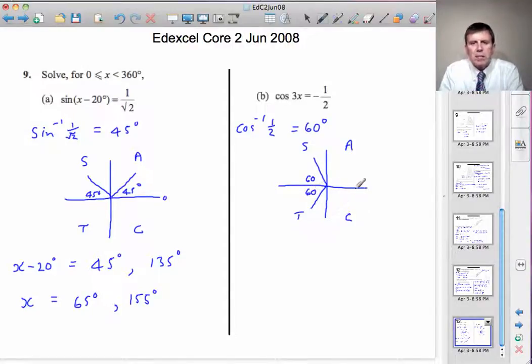And that gives me the answers. That angle there, measuring from 0. And that angle there. So, I can say that 3x is equal to... That angle is 180 minus 60, which is 120. And 180 plus another 60 is 240. But as I said before, if we want x between 0 and 360, then we'll have to look at 3x in three revolutions round the CAST diagram. So, there's another four answers to come.